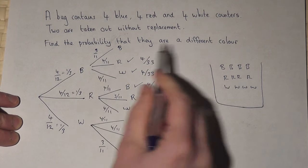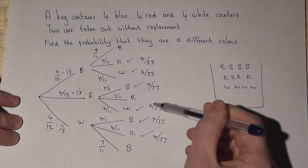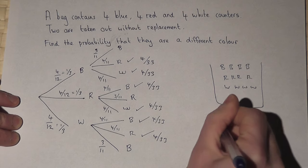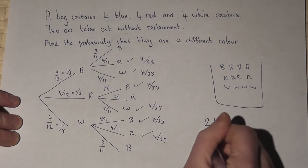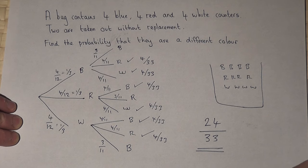So to find the chance they have a different colour I add together all those options: four, eight, twelve, sixteen, twenty, twenty-four, all over thirty-three. And that is the final answer to the question.